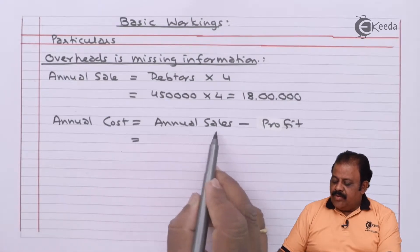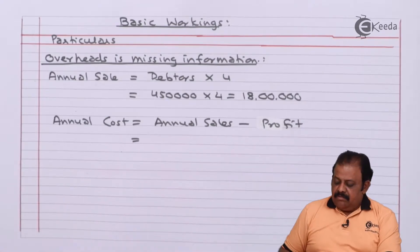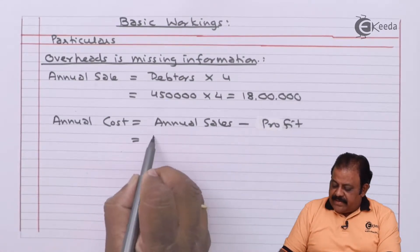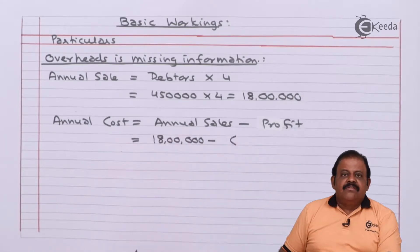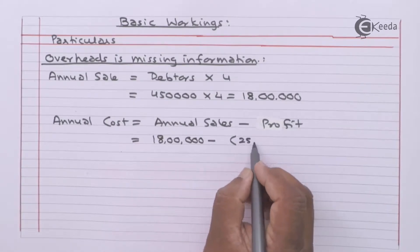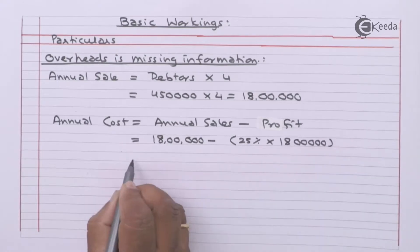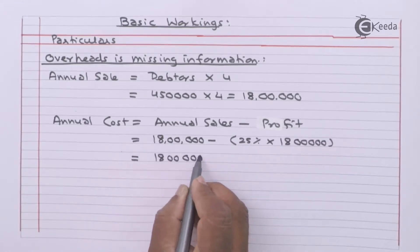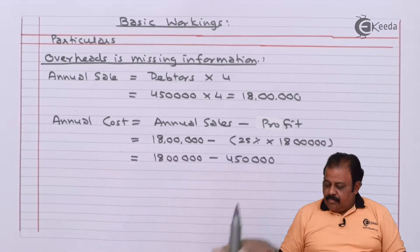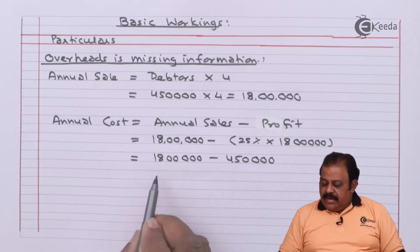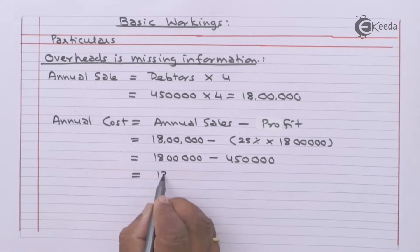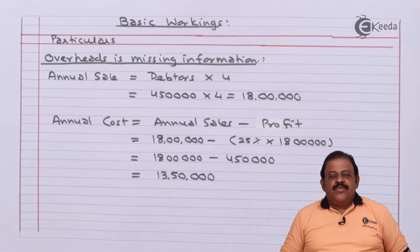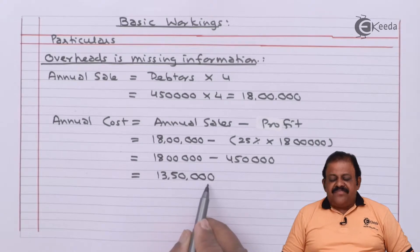Annual cost is equal to annual sales minus profit. Annual sales we have is eighteen lakhs. Profit is twenty-five percent on sales, so profit is four lakh fifty thousand. Eighteen lakhs minus four lakh fifty thousand — so annual total cost is thirteen lakh fifty thousand.